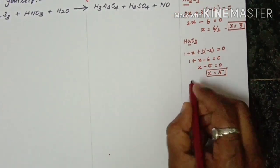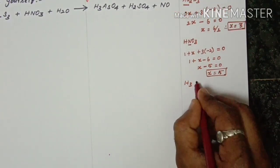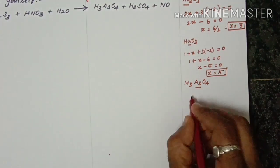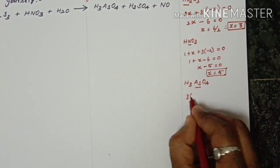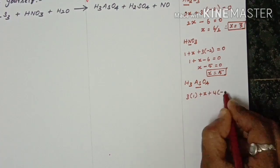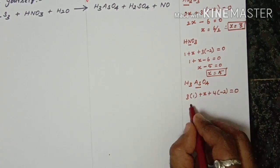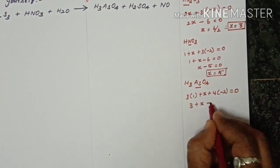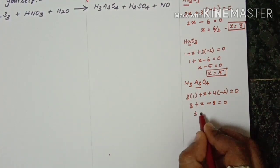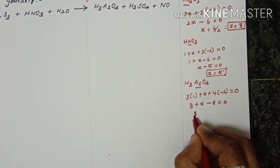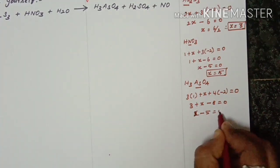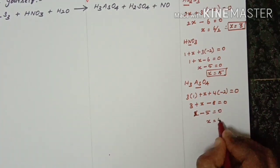Third compound, H3AsO4 — finding arsenic's oxidation number: 3(1) plus x plus 4(-2) equals 0. So 3 plus x minus 8 equals 0, giving x minus 5 equals 0. Therefore, x equals plus 5.